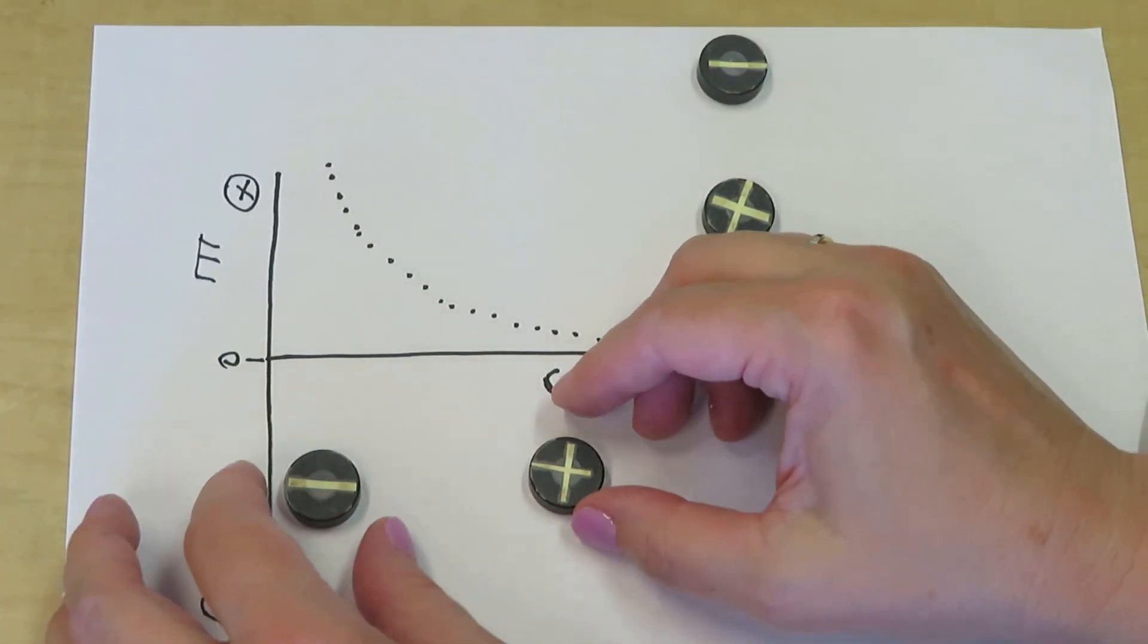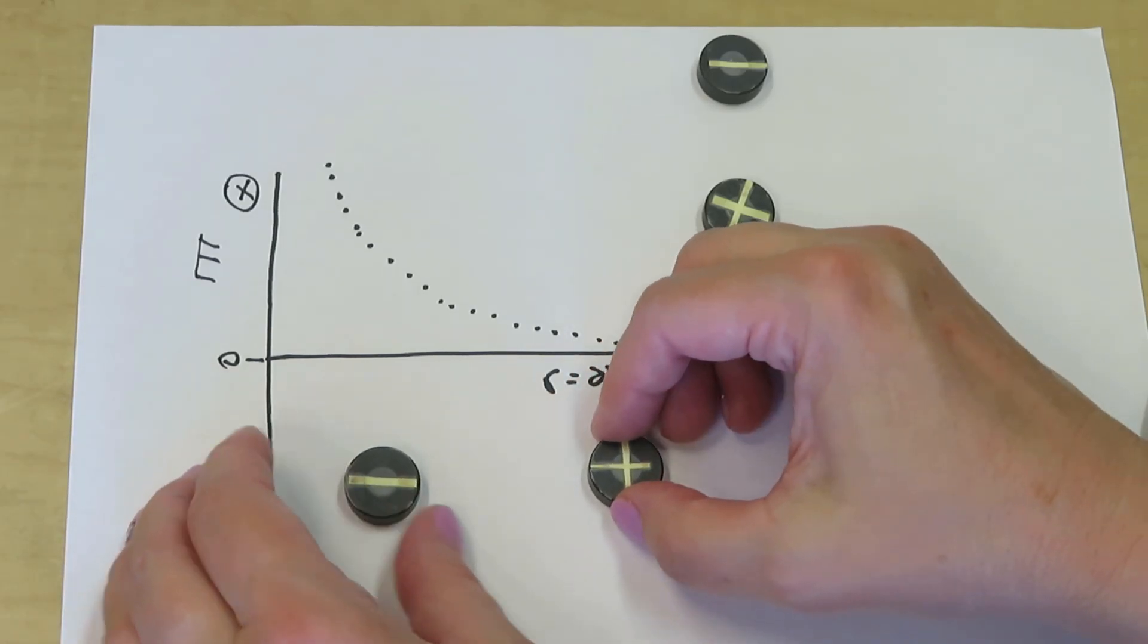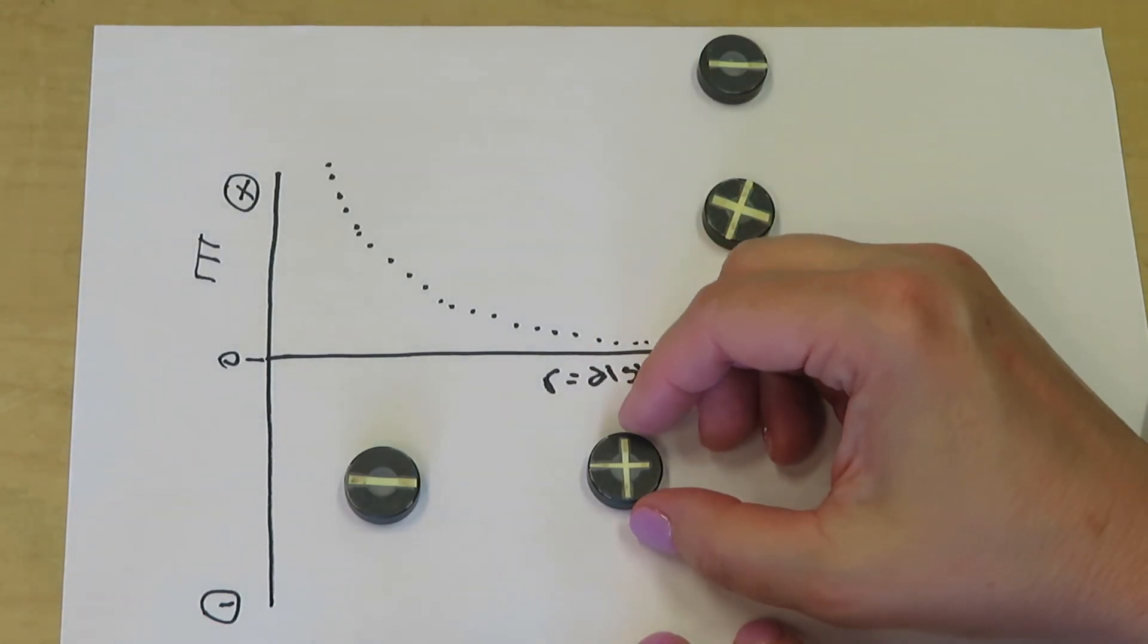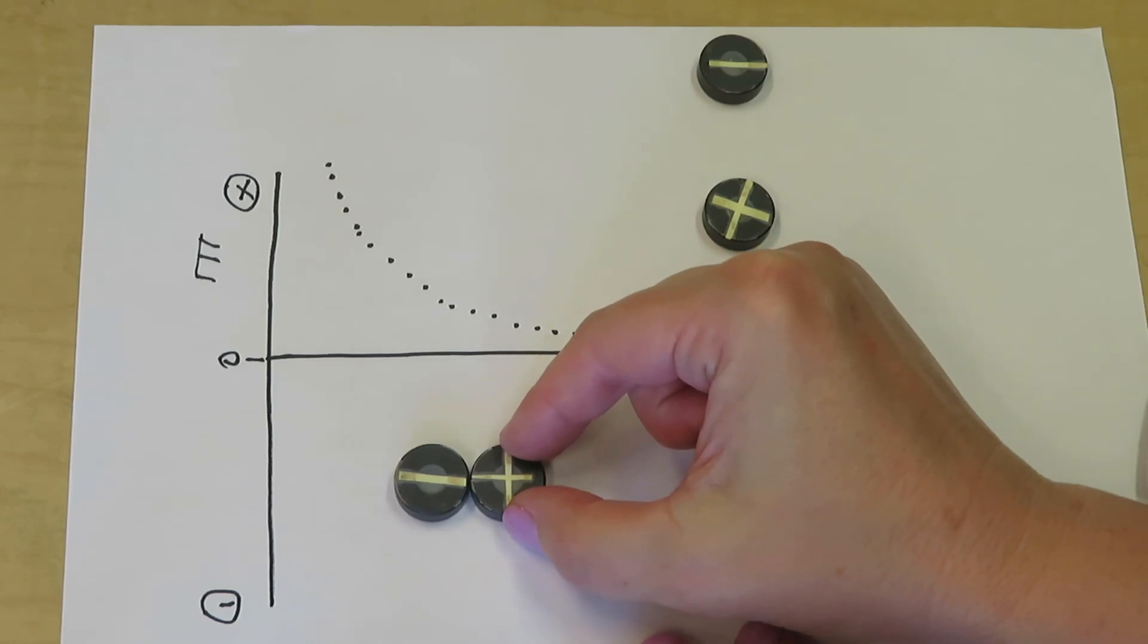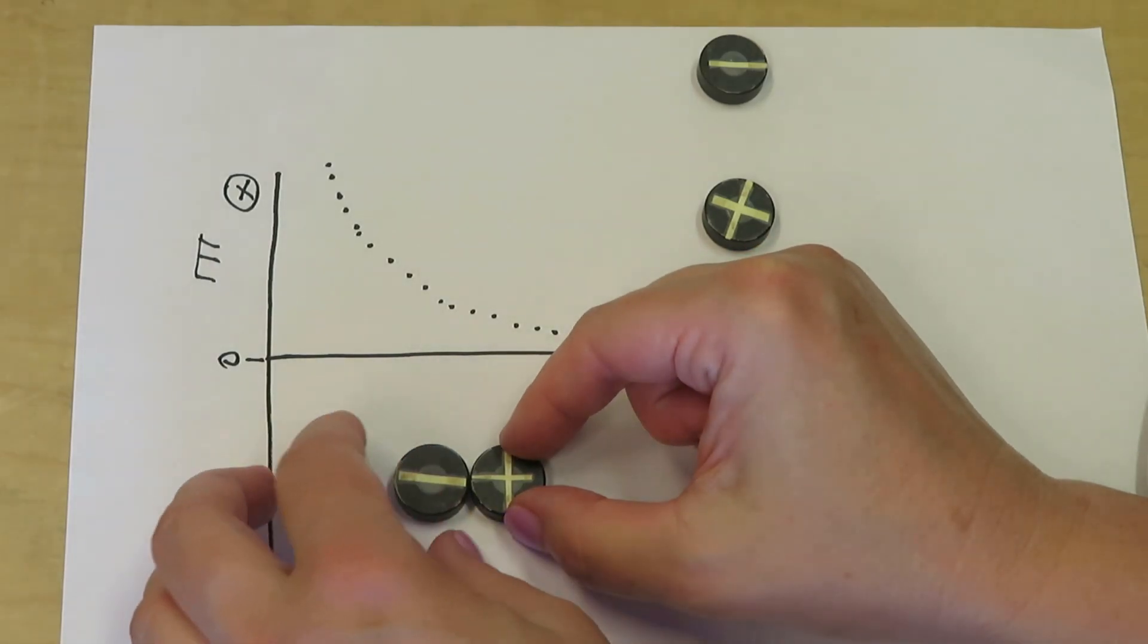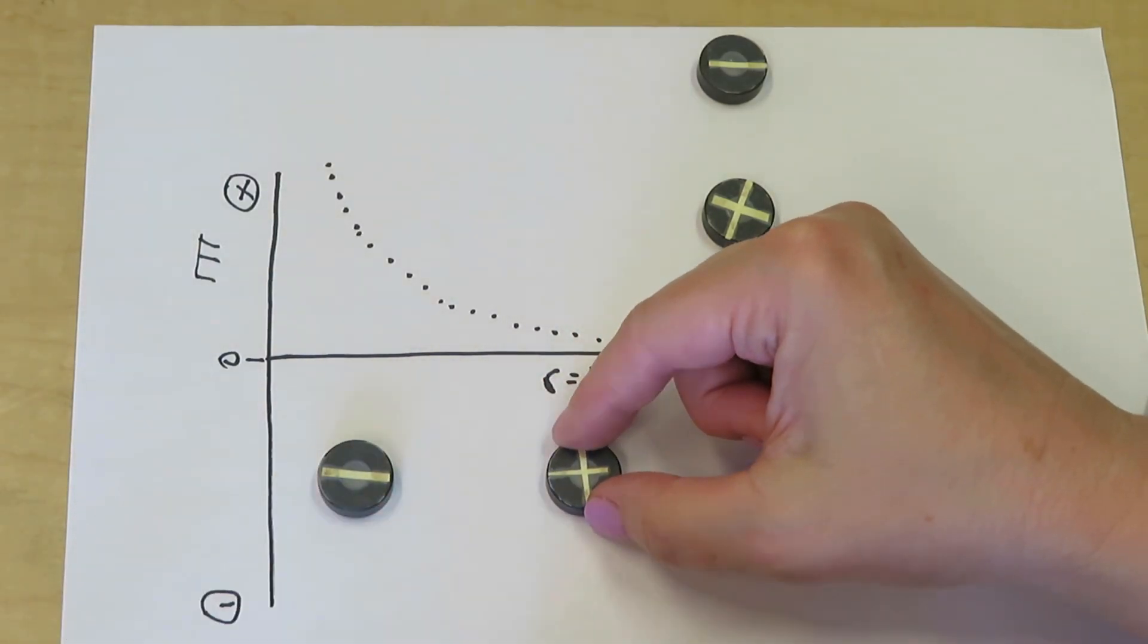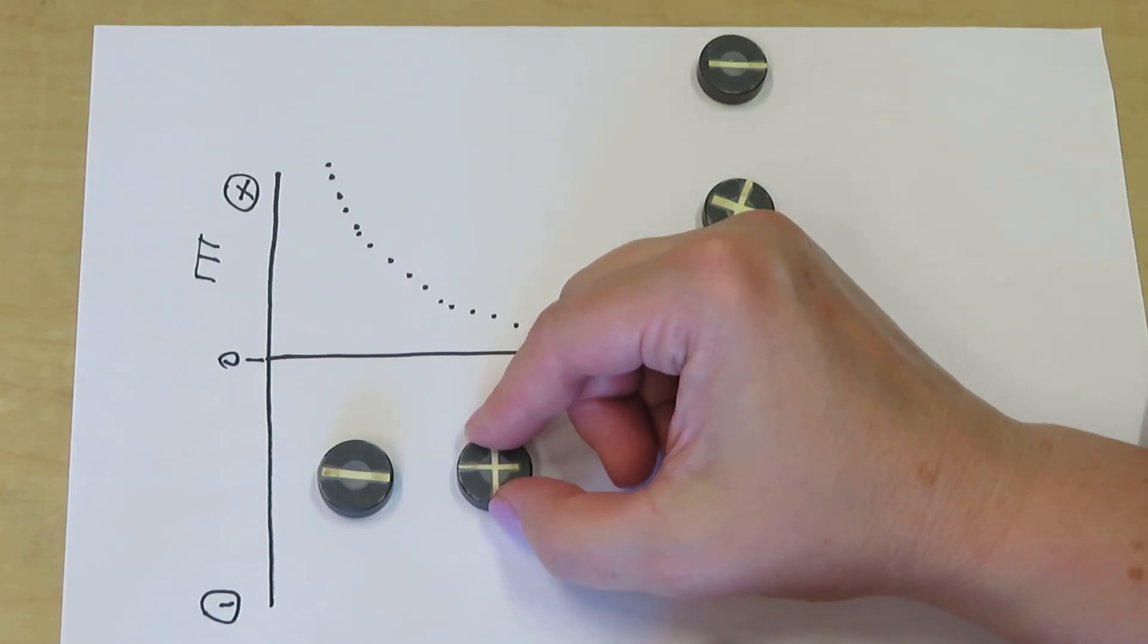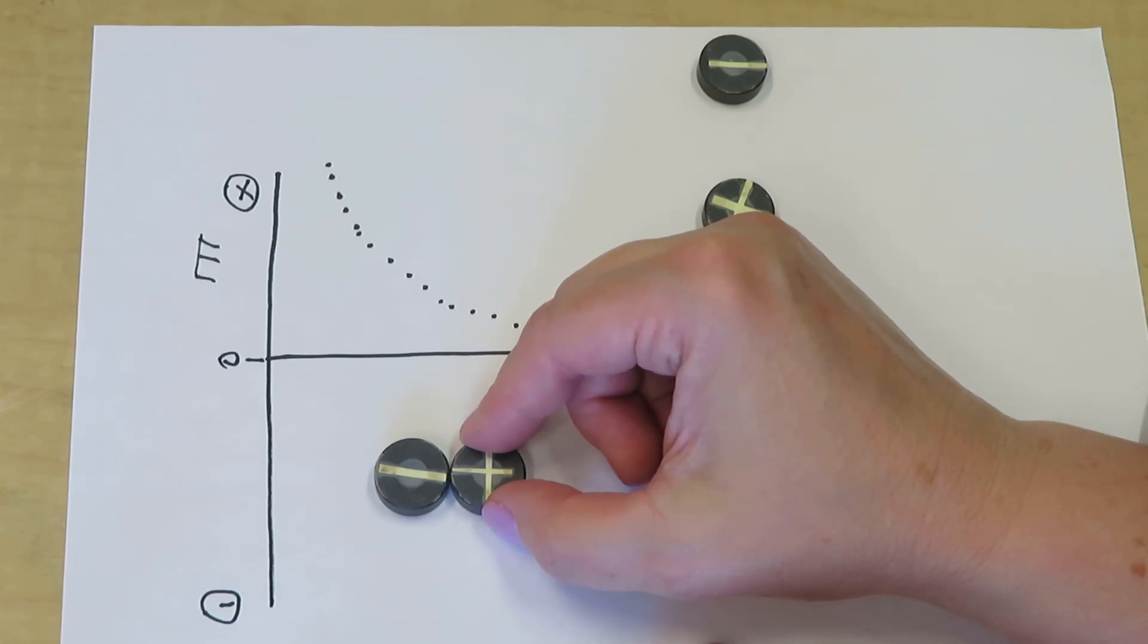Now let's look at opposite charges. What happens when opposite charges approach one another from infinity? Let's try that again in slow motion.